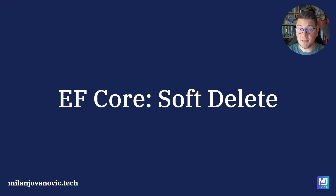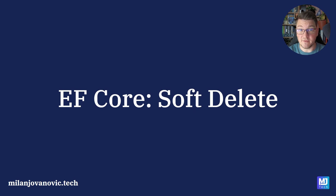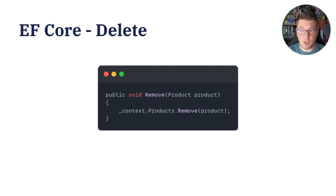Let's start by quickly explaining how soft deletes work with EF Core. To understand how a soft delete is different from an actual delete, let's take a look at how we delete data with EF Core. You can access your database context and call the remove method on a respective database set, and after you call save changes,